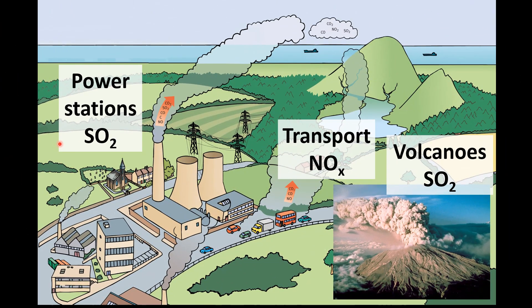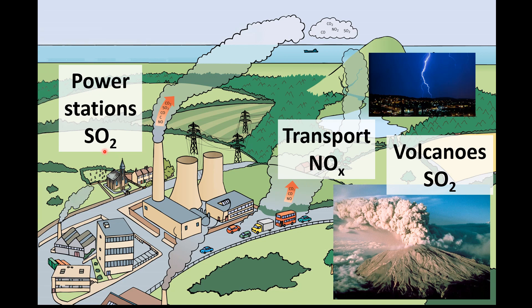Acid deposition is caused by acidic gases such as sulfur dioxide and the oxides of nitrogen. Man-made sources of sulfur dioxide include power stations that burn coal containing sulfur, and natural sources include volcanoes. Man-made sources of nitrogen oxides include transport such as the internal combustion engine in a car. Natural sources of nitrogen oxides include lightning and bacteria.